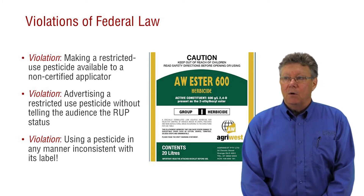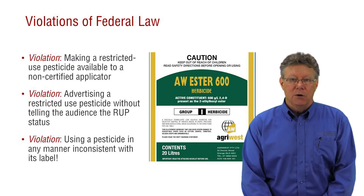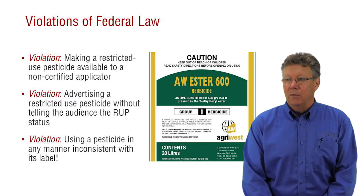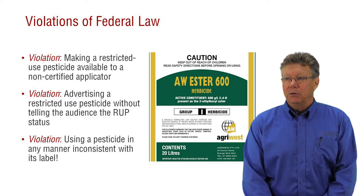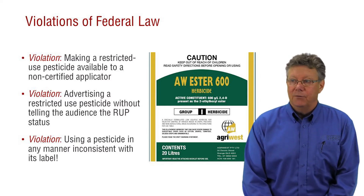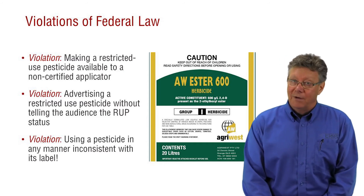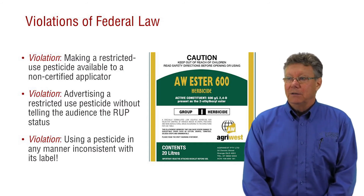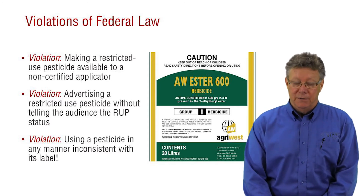It's a violation of federal law to use a pesticide in any manner inconsistent with its label, and it says so right on the label — you can't miss it. This is one violation that is used during most enforcement activities against applicators. Usually, if an applicator has one violation, they typically have several violations of label directions associated with the initial misdeed.